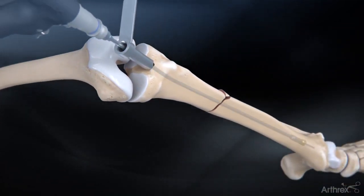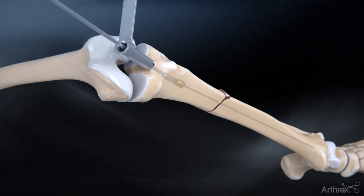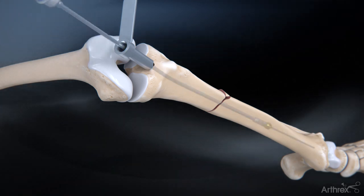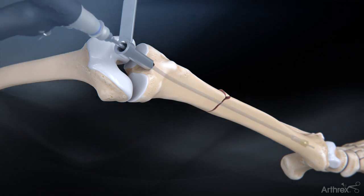Using the cannulated reamers, sequentially ream the canal until cortical chatter is obtained. It is recommended to ream 1 to 1.5 mm over the desired diameter of nail.